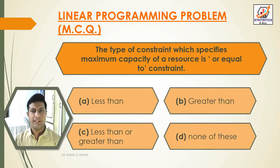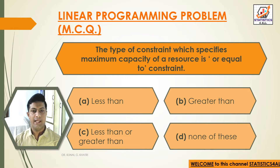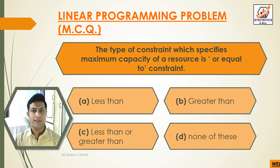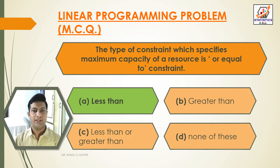Question 8: The type of constraint which specifies maximum capacity of a resource is a less than or equal to constraint. Option A: Less than. Option B: Greater than. Option C: Less than or greater than. Option D: None of these. Answer: Less than — the type of constraint which specifies the maximum capacity of a resource is less than or equal to constraint.